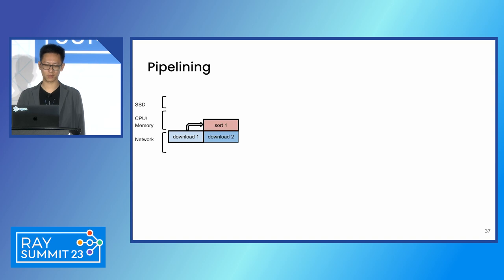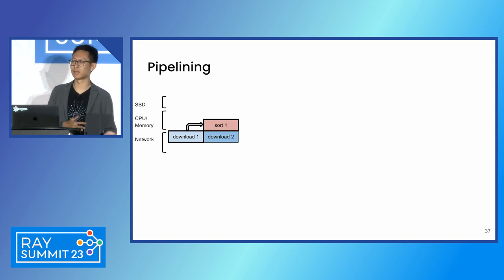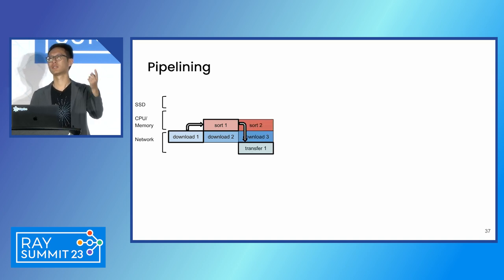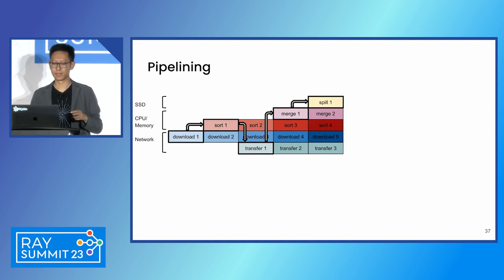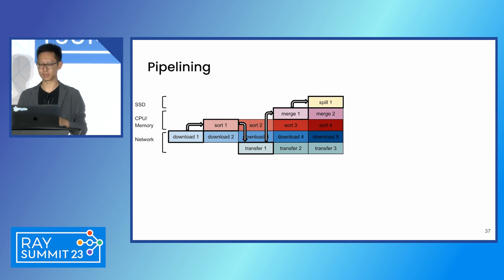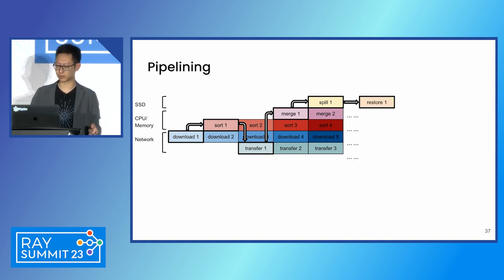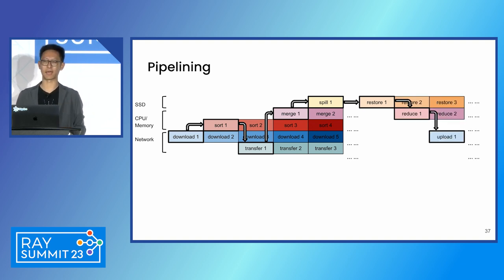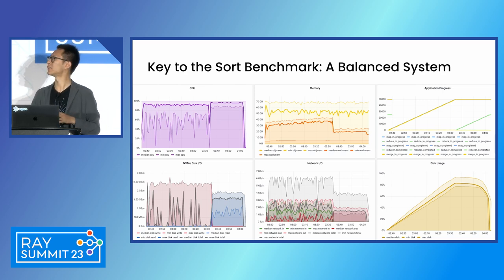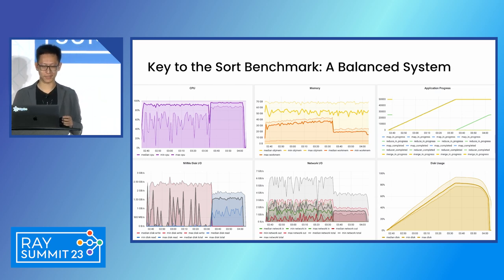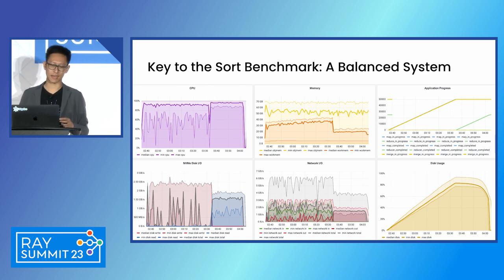This gives us this pipelining thing which is pretty cool. If you think about sorting, you start by downloading data from S3, sort the blocks, transfer the blocks to the receiving end, then merge and spill them. In every step, the original machine can start another task, creating this cascading pipeline that fully saturates all of the pipes. On the reducing side, you restore the blocks, run the reduce, and send results back to S3 — this can be pipelined with other operations. The actual system performance chart while running the 100-terabyte sort shows everything is saturated: CPU is saturated, networking is pretty saturated, we used almost all of the disk space, and progress is pretty linear — which is pretty impressive for a very large-scale system.